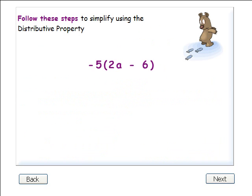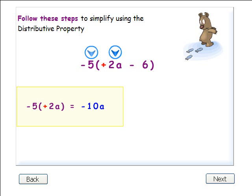Back to our expression, negative 5 times 2a minus 6. Follow these steps to simplify using the distributive property. Step 1: Write down any invisible positive signs. Step 2: Multiply the minus 5 with the first term inside parentheses, 2a.